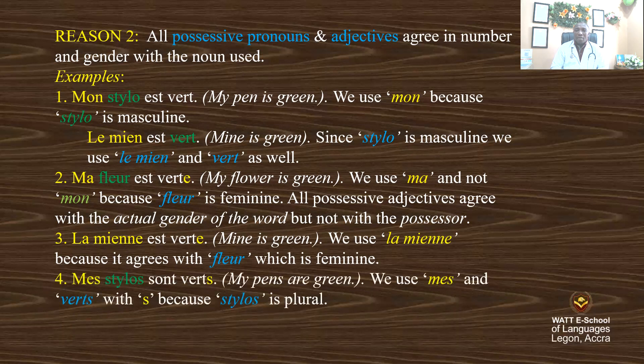'Mes stylos sont verts' — my pens are green. We use 'mes' and 'verts' with S because stylo is plural. In English, you say 'my car is green' or 'her car is green' — the adjective 'her' refers to the person, the possessor. But in French, the opposite is the case: it refers to the thing possessed, not the possessor.